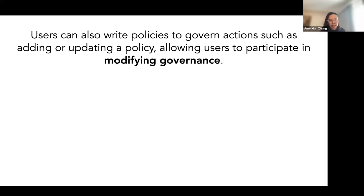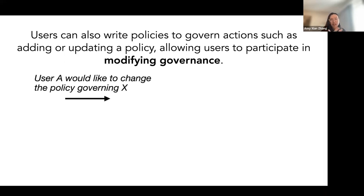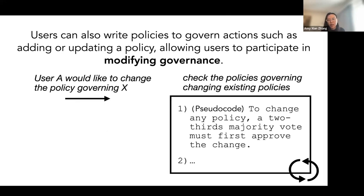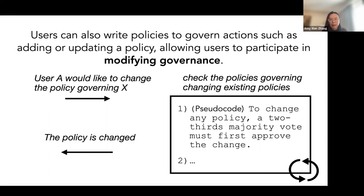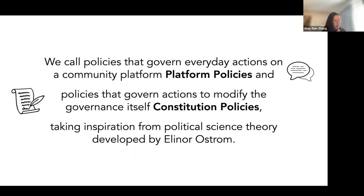In addition to policies that instantiate a particular governance, there's also a process in PolicyKit for modifying governance over time. We also have policies for changing policies — the metagovernance aspect. If someone wants to change the policy governing something, PolicyKit checks policies the community has written governing the action of changing a policy. For example: to change any policy, a two-thirds majority vote must first approve the change. These are called Constitution policies, drawing inspiration from political scientist Elinor Ostrom's two-tier layer of governance.